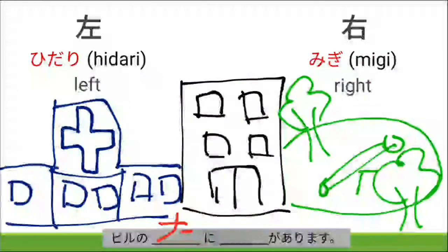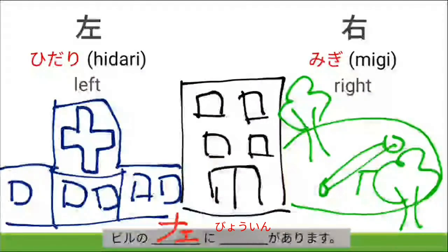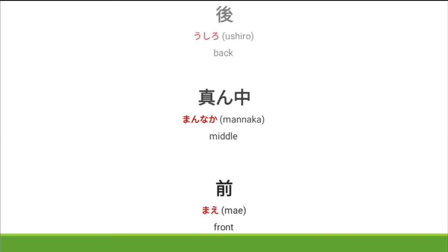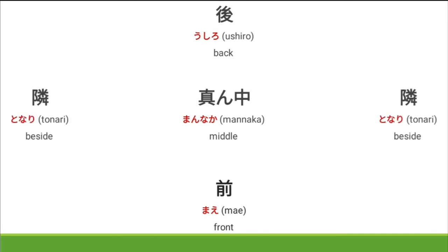Hidari — so, 'biru no hidari ni.' Ano ang meron? We have a 'byoin' — byoin is a hospital. So, there is a hospital at the left side of the building. Sige, we have 'mannaka' which is middle. Mannaka is nasa gitna. Yung front natin is 'mae.' Ang sa likod natin or sa back is 'ushiro.' And sa katabi natin, sa side, is 'tonari' — beside.